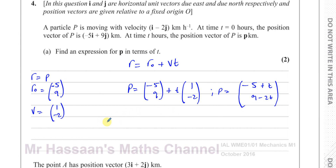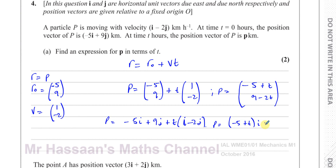You can also write it as a vector in terms of i and j: minus 5i plus 9j plus t times (i minus 2j). Or you could write it as (minus 5 plus t)i plus (9 minus 2t)j. All of those are perfectly acceptable ways of writing your answer. Because the question was given in terms of i's and j's, it's probably better to use one of those forms, with kilometres at the end.